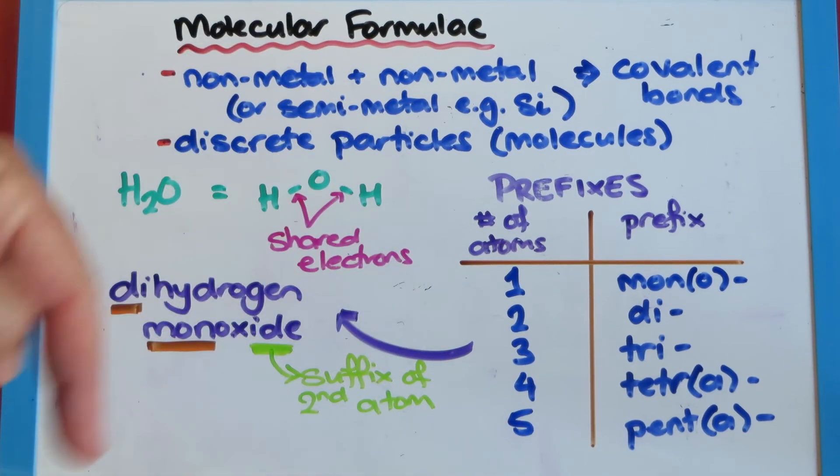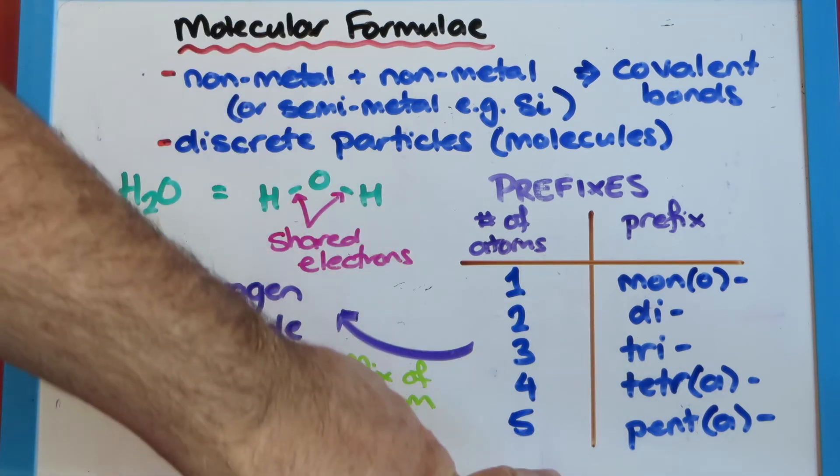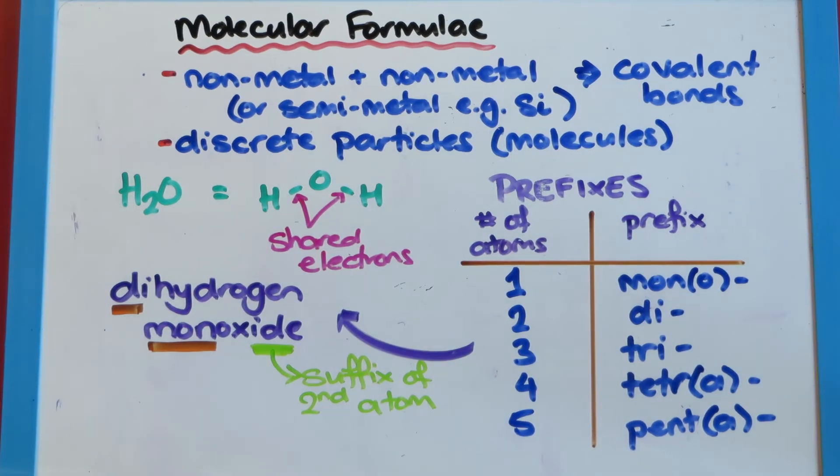Then when you get to five, and every one after that, it's just the prefix for the shapes you'd expect. So a pentagon has five sides, five is penta. A hexagon has six sides, so six would be hex or hexa, that sort of thing.